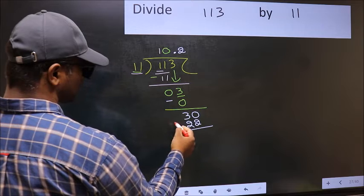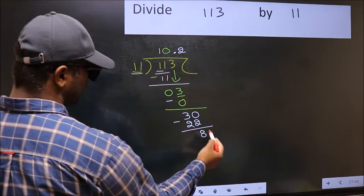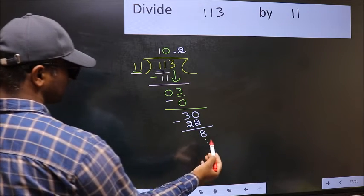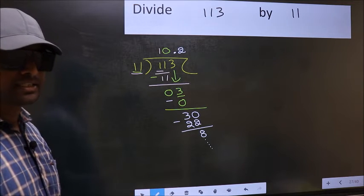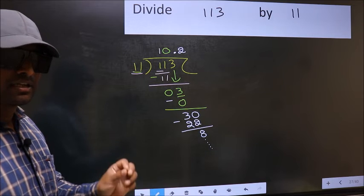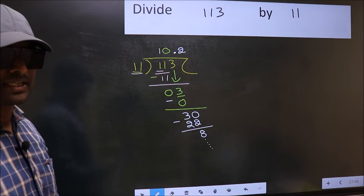So now you should subtract. We get 8. And continue the division. I am not doing that. Did you understand where the mistake happens? You should not do that mistake.